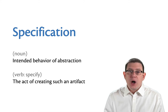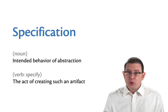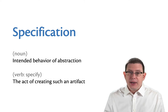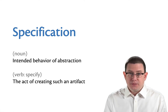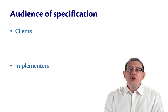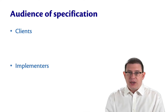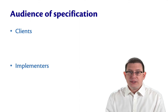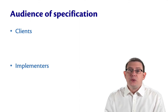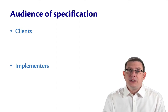We're communicating to other humans what the behavior is supposed to be. As a verb, to specify is the act of creating such an artifact — creating a specification. There are two different audiences for specifications, and we write documentation for both audiences, though it's not the same documentation because they have different needs.